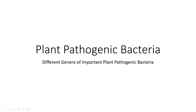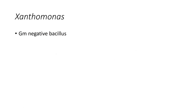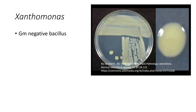We're going to look at the major genera of plant pathogenic bacteria. There really aren't that many, but they are important in the things that they do. Xanthomonas — 'xantho' refers to yellowish. These are gram-negative bacilli. When you grow them in culture media, they have a yellowish, somewhat mucoid colony.